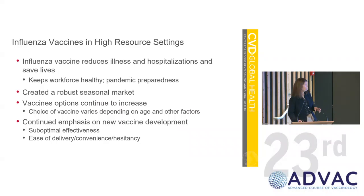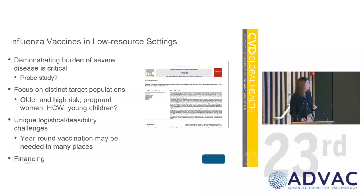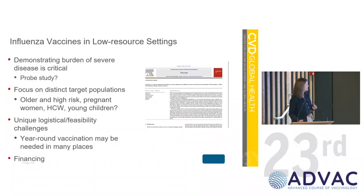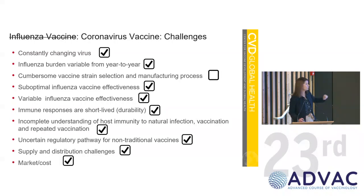In summary: if you're in the U.S., you choose to use a lot of flu vaccine because it reduces illness and keeps your workforce healthy — a robust seasonal market with different options for different ages, while continuing to try to make better vaccines. If you're in a low resource setting, it's a tougher calculation. You're really going to want to know if it's affecting severe disease, and you might want to start by focusing on specific populations. At present there's no Gavi financing, and that creates a problem. Every problem I've outlined for influenza is perhaps also a problem with coronavirus — lessons learned on both sides.